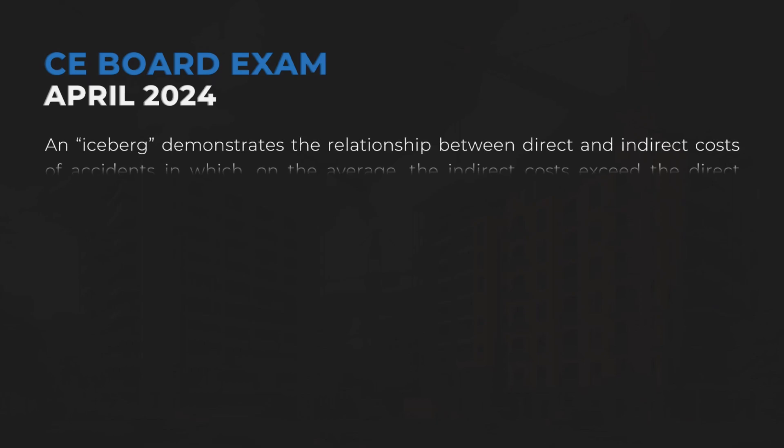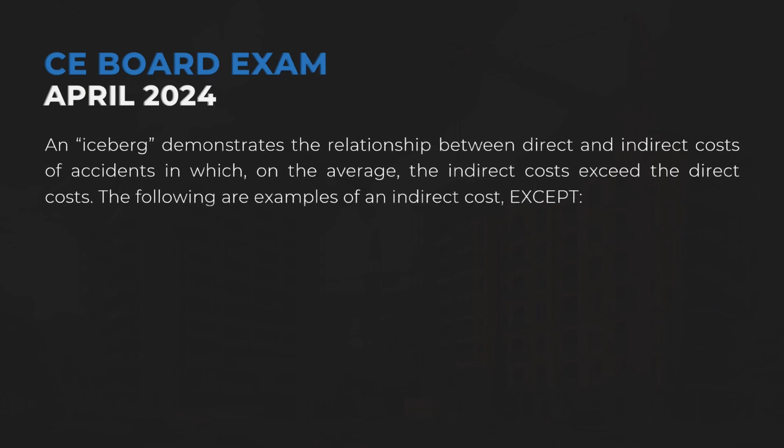An iceberg demonstrates the relationship between direct and indirect costs of accidents, in which, on the average, the indirect costs exceed the direct costs. The following are examples of an indirect cost except…